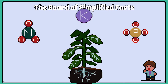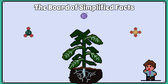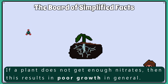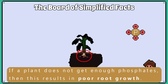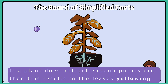You must learn what happens to a plant if it lacks any of these three minerals. If a plant does not get enough nitrates, this results in poor growth in general. If a plant does not get enough phosphates, this results in poor root growth. If a plant does not get enough potassium, this results in the leaves yellowing.